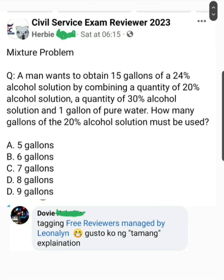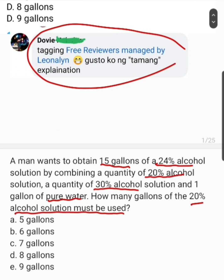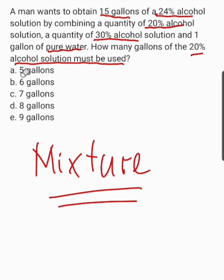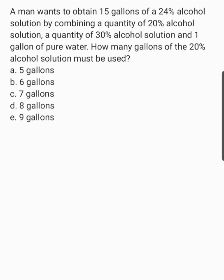At ito ay random post sa isa sa ating bagong FB group na tinatambayan natin lately. At meron kasing nakatag sa atin, so ating gawa nito ng detailed solution. Unang-una, i-identify natin yung mismong given. Ang solution dito ay yung mismong mixture. 15 gallons of 24% alcohol, yan yung total.